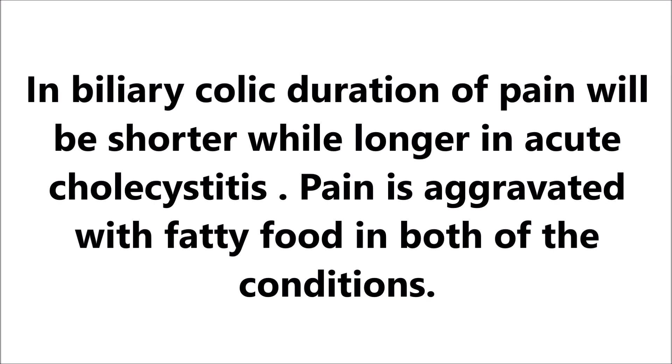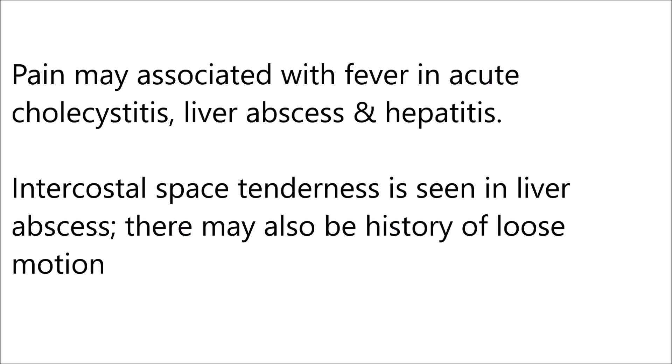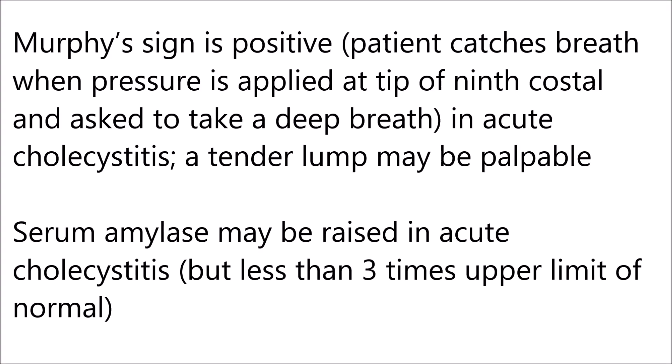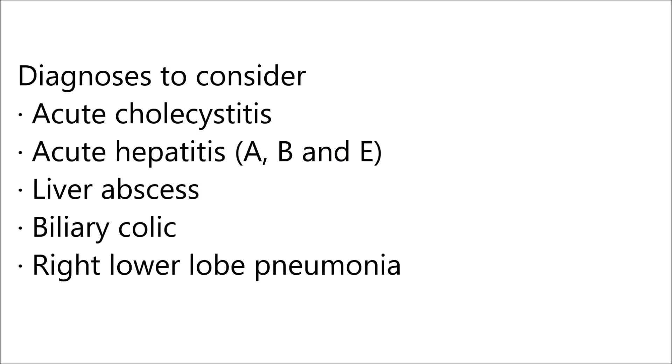In biliary colic, duration of pain will be shorter, while longer in acute cholecystitis. Pain is aggravated with fatty foods in both conditions. Pain may be associated with fever in acute cholecystitis, liver abscess, and hepatitis. Intercostal space tenderness is seen in liver abscess. Murphy's sign is positive — the patient catches breath when pressure is applied at the tip of the ninth costal cartilage and is asked to take a deep breath in acute cholecystitis. A tender lump may be palpable. Serum amylase may be raised in acute cholecystitis but less than three times the upper limit of normal. The differential diagnoses to consider include acute cholecystitis, acute hepatitis A, B, and E, liver abscess, biliary colic, and right lower lobe pneumonia.